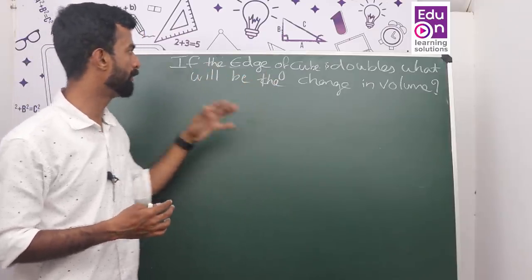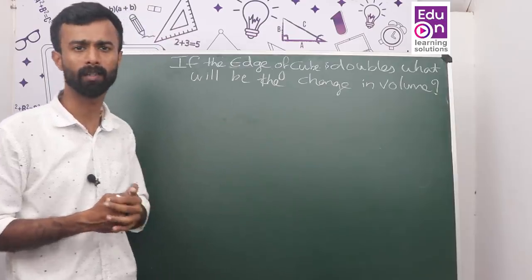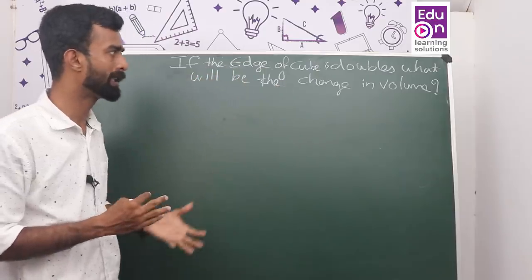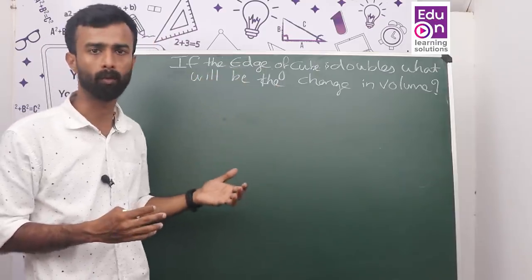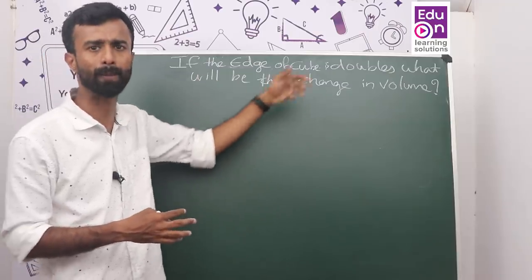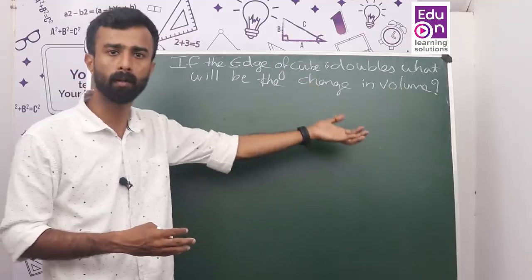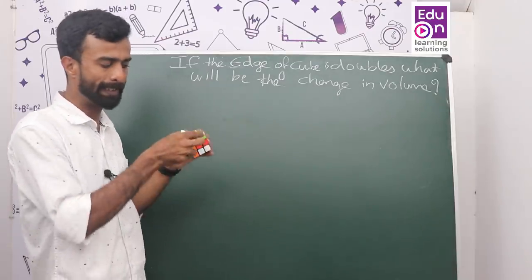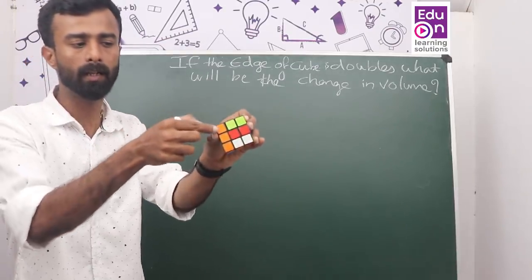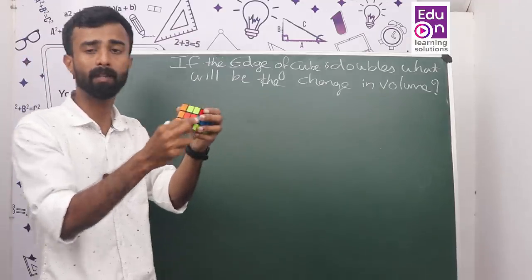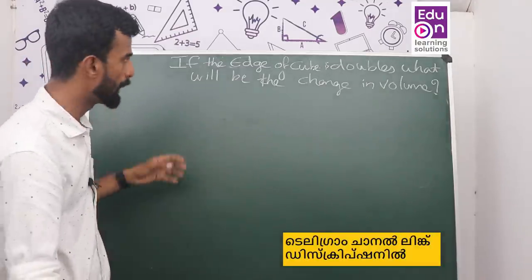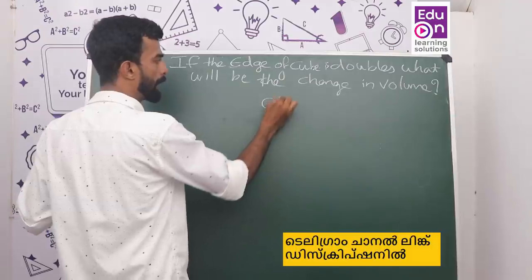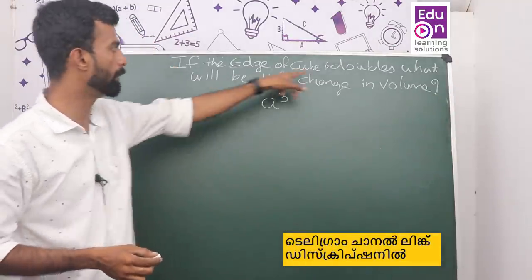If the edge of a cube is doubled, what will be the change in volume? If the edge of a cube is doubled, what will be the change in volume?